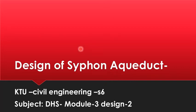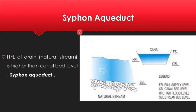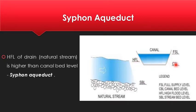Today we are going to study the design of siphon aqueduct, the second design in module 3. First, let us go through the types of cross drainage works. Siphon aqueduct comes under type 1 cross drainage work, in which the irrigation canal passes over the drainage. In a siphon aqueduct, the high flood level of the drain is higher than the canal bed level, and we are going to design this in the lecture.